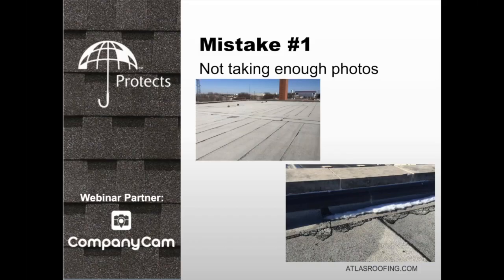The first mistake is simply not taking enough photos. Adjusters require visual proof — you want to paint a full picture, show them what they missed, and avoid arguments about what should be paid out. Don't just take two photos; take plenty to really show the big picture. A single photo of a roof with no context doesn't tell the adjuster what they need to see.